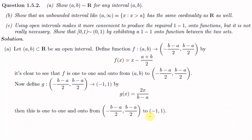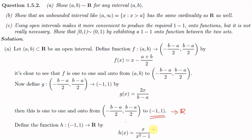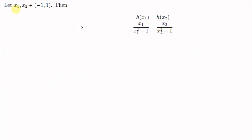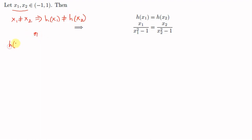Now we define another function h from the open interval (-1,1) to ℝ by h(x) = x/(x²-1). This function is non-linear, so we need to check whether it is one-to-one and onto. To check that h is one-to-one, we take two points x₁ and x₂ in (-1,1) and start with h(x₁) = h(x₂).